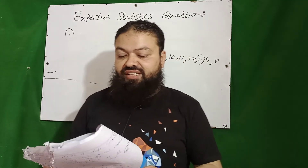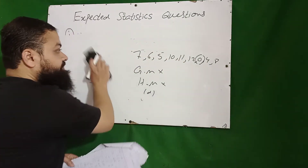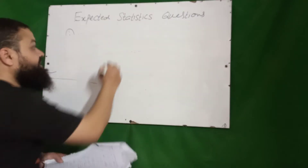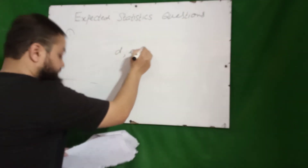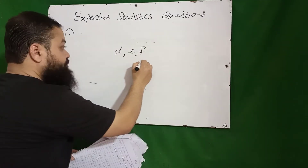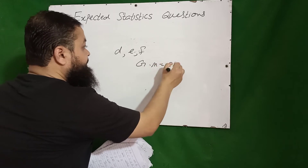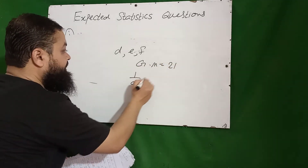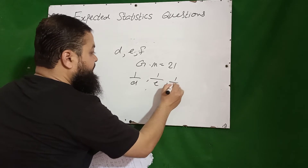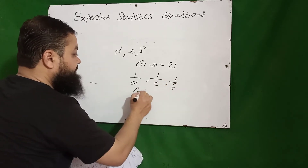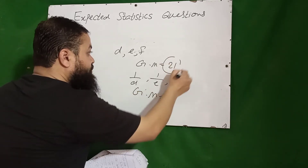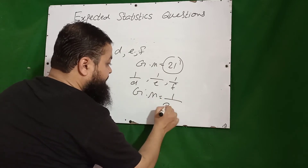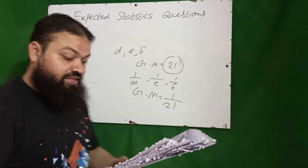The next question: there are three numbers d, e, and f, and the geometric mean is calculated to be 21. If we now have the numbers 1/d, 1/e, and 1/f, the geometric mean of the new data set will be the reciprocal of the original geometric mean — that is, 1 over 21.